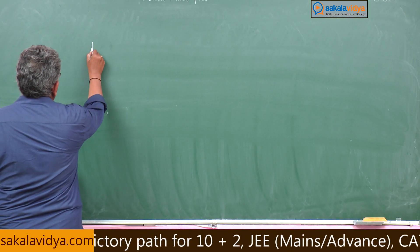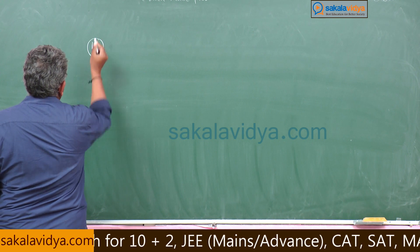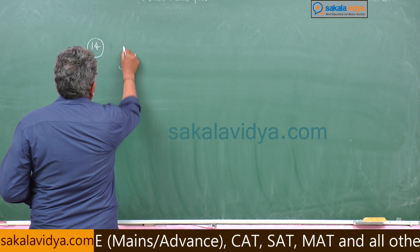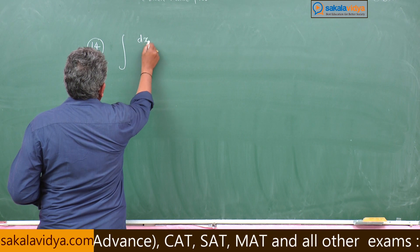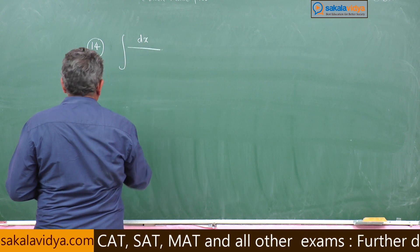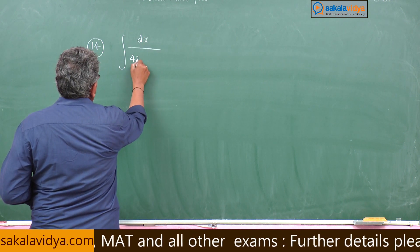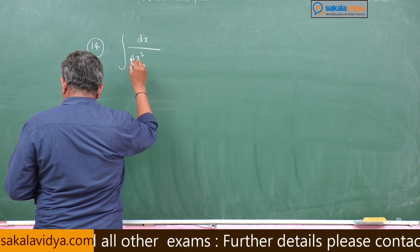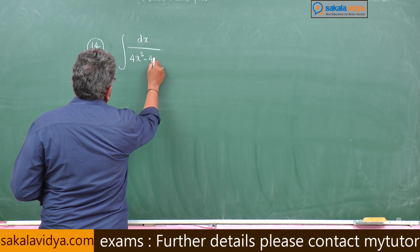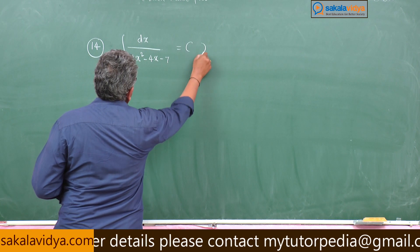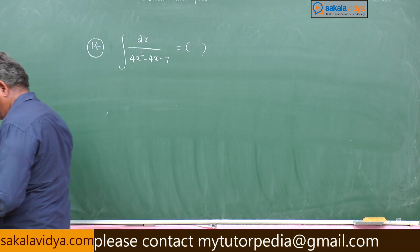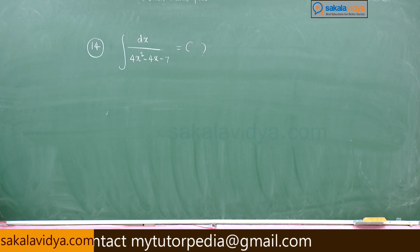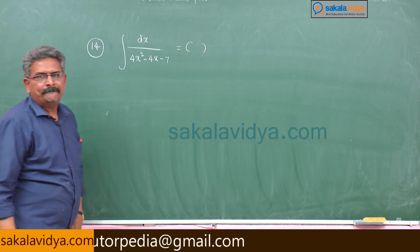14: integral d x by 4 x square minus 4 x minus 7. This is the problem.